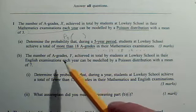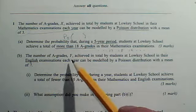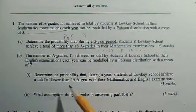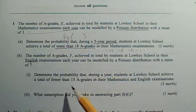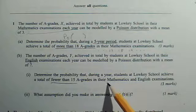Then in part B, we've got, as well as maths grades, we've now got English grades, and the number of A's in English is Y. We want the probability that there was a total of fewer than 15, so fewer than 15 in maths and English combined.